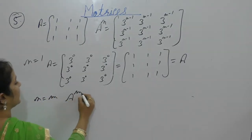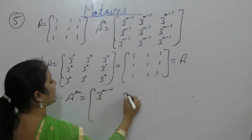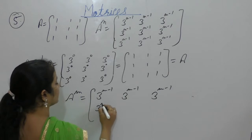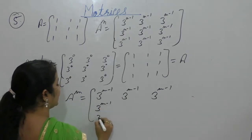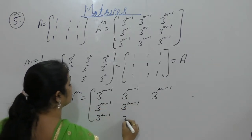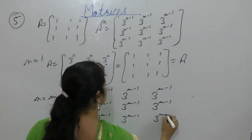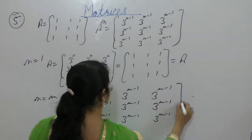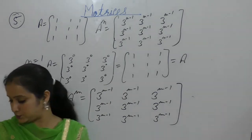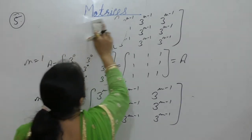Now let us assume that the result is 2 for n equals to m, giving us 3m minus 1.